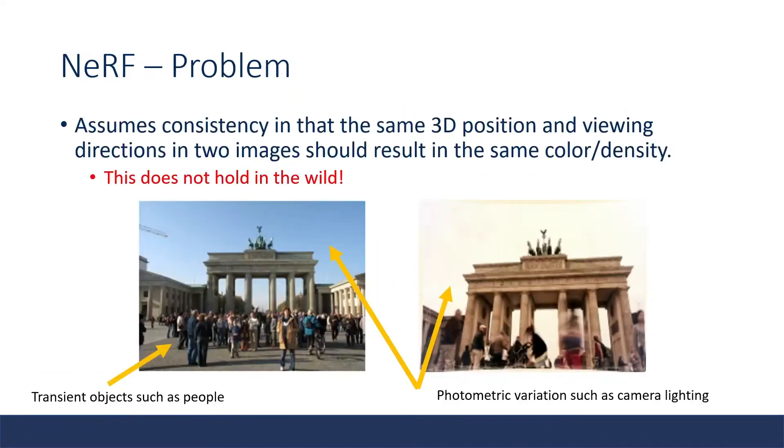So what is the problem with NeRF's approach? One big problem is that NeRF assumes consistency and that the same 3D position and viewing direction in two images should result in the same color and density. But this does not hold in the wild. As seen in the images, we have transient objects such as people and also photometric variations such as lighting when we look at image collections in the wild.